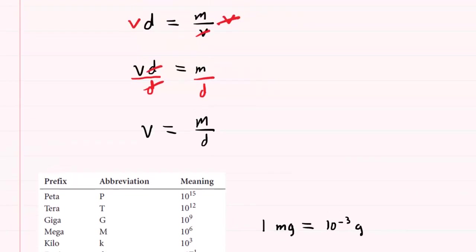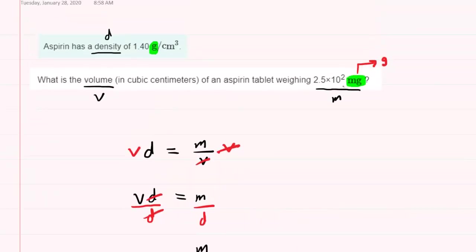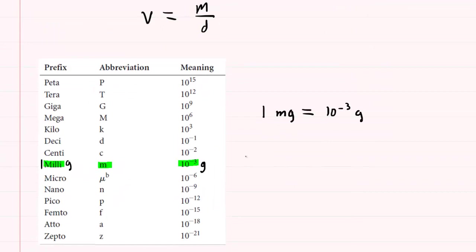We will use that conversion factor to convert our given mass into grams. So we'll take the 2.5 × 10^2 milligrams and multiply by a conversion factor. When you set up your conversion factors, make sure that whatever unit you're beginning with will be the same unit in the denominator of your conversion factor. So we're going to put milligrams down here. This way, when we multiply, these will cancel out.